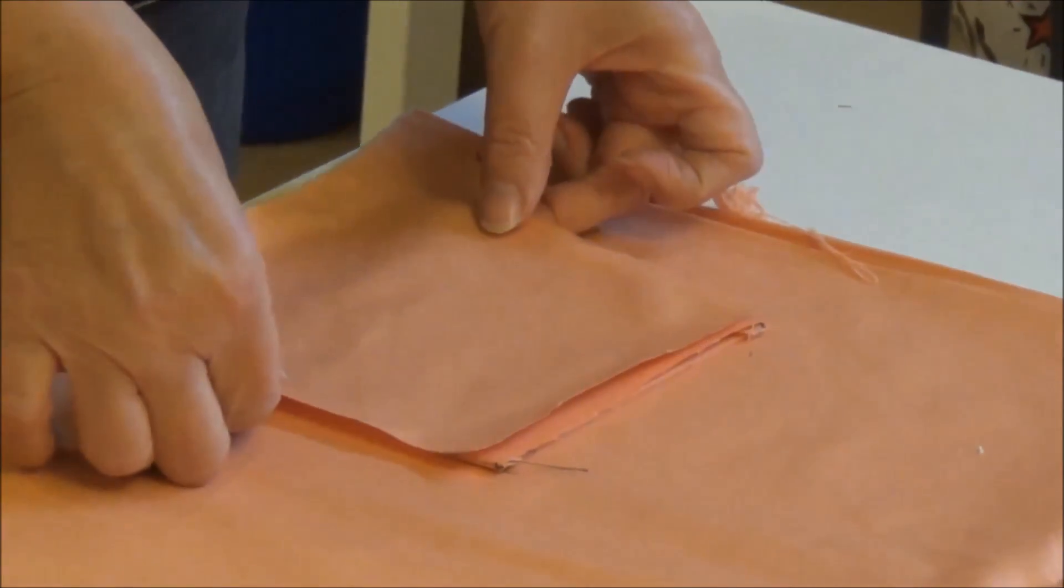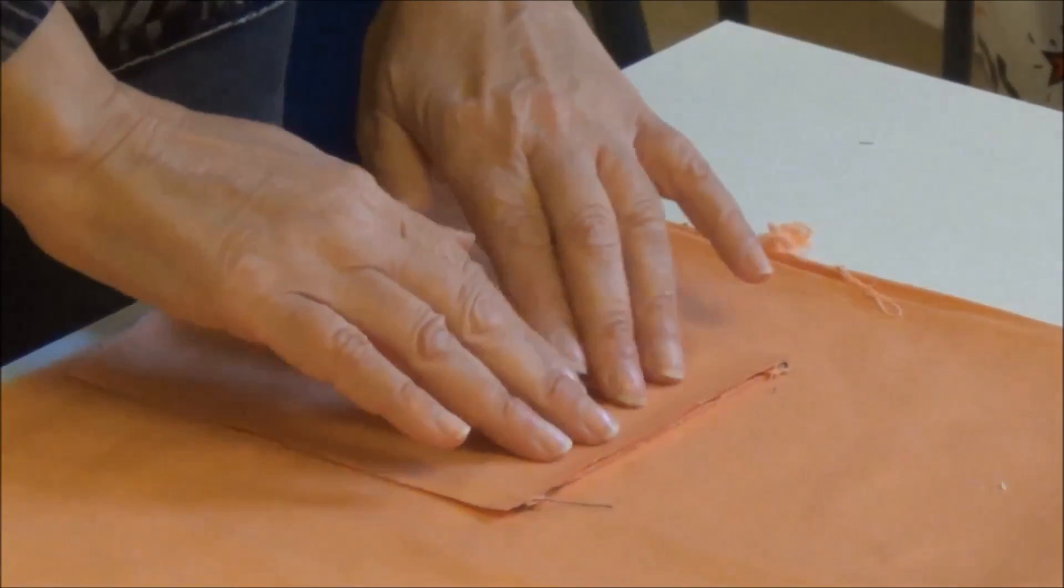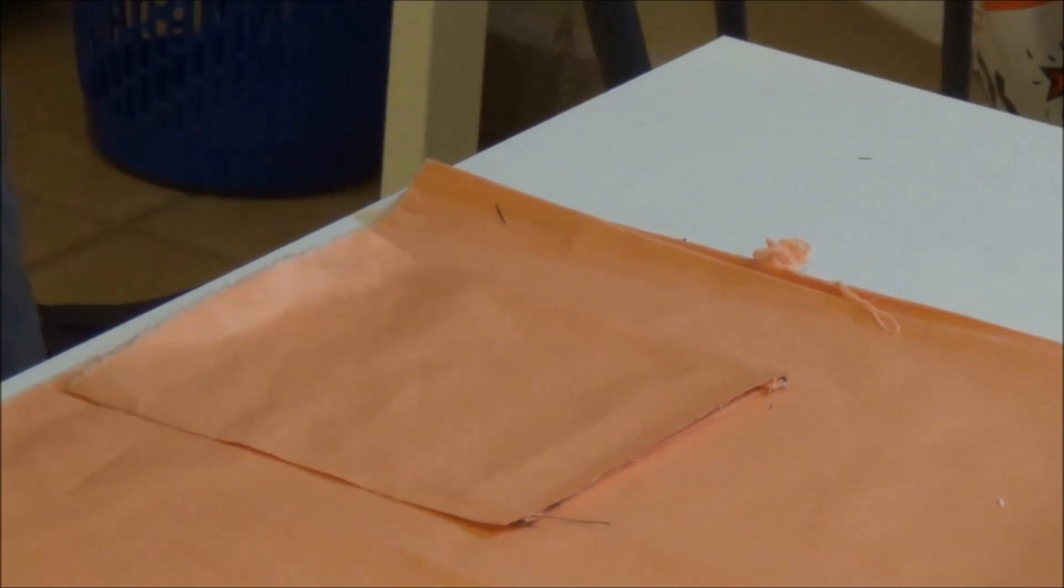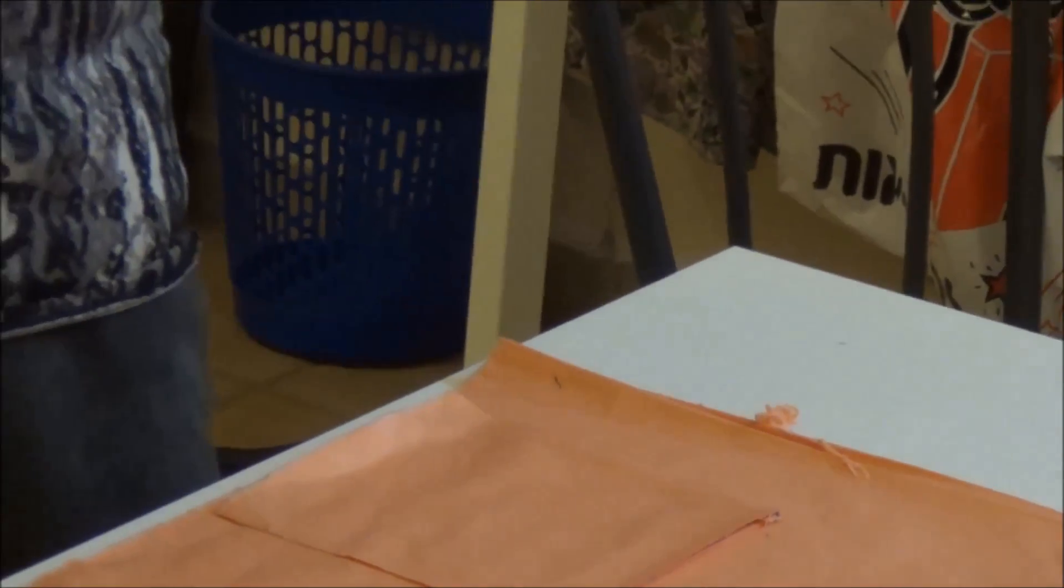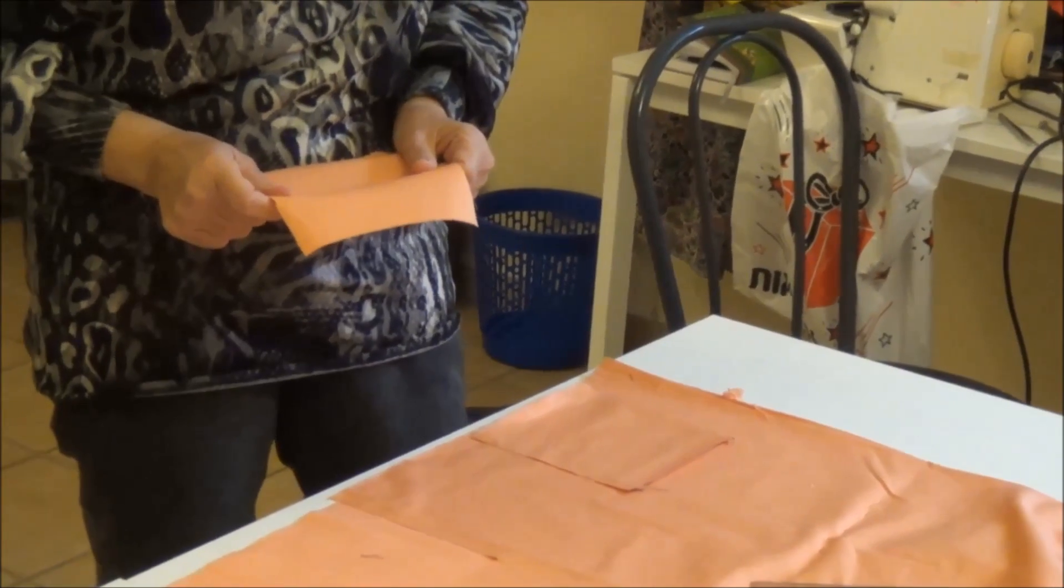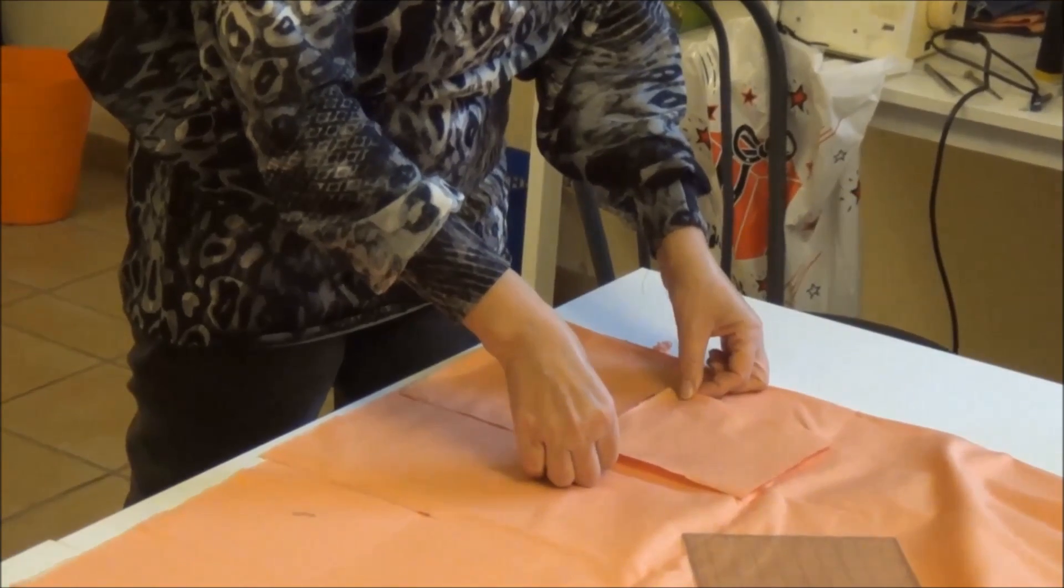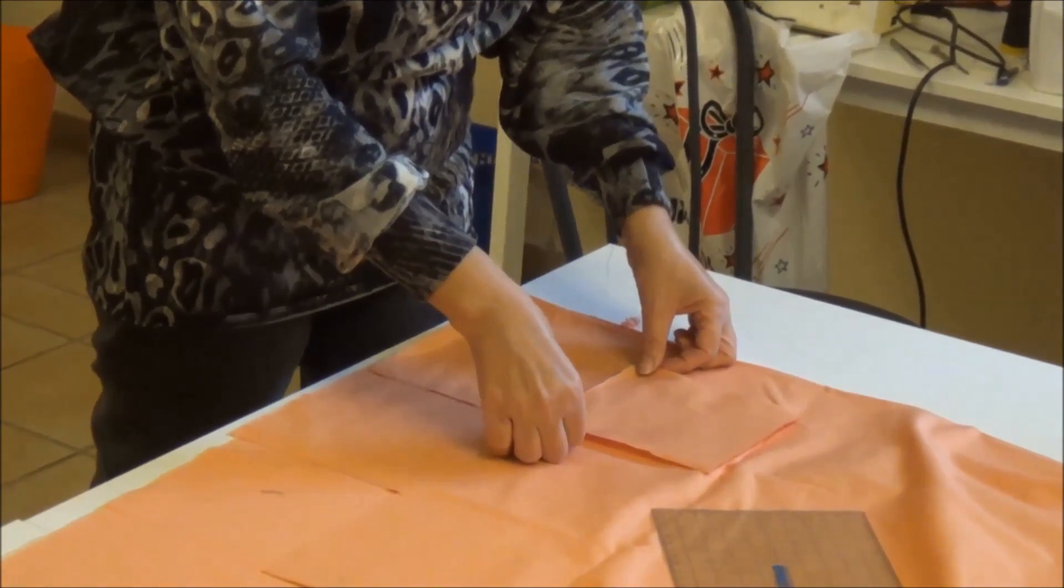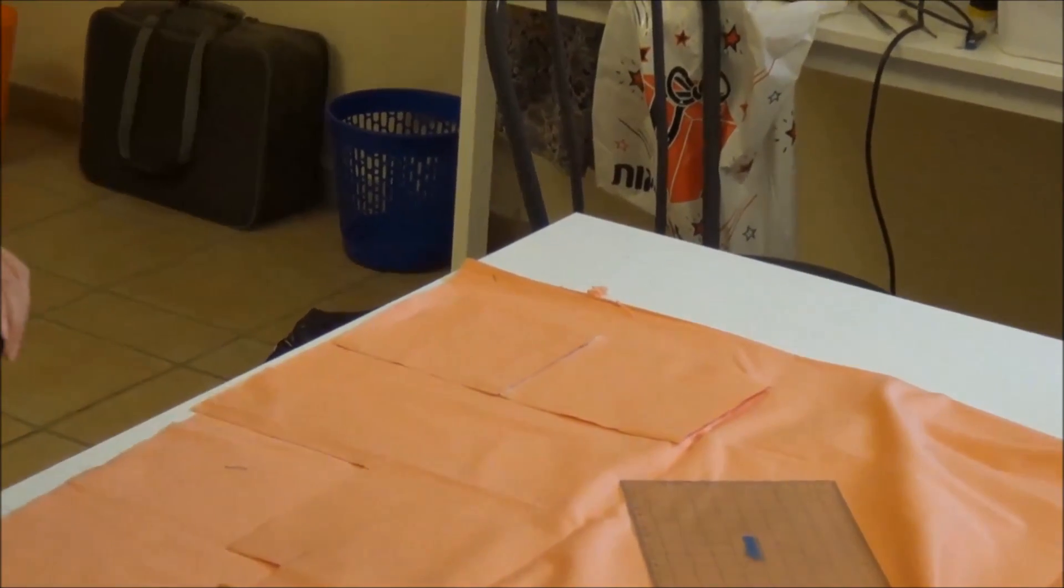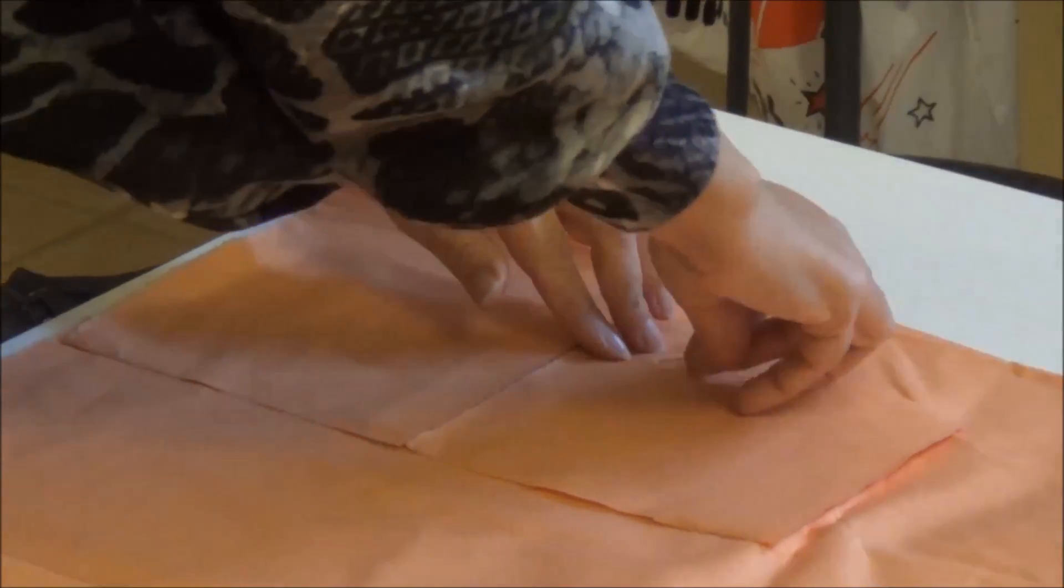Vedete, bisogna essere precisi al millimetro, proprio deve essere nello stesso punto lasciando ai lati un centimetro per parte. Poi vedrete che è il centimetro di cui abbiamo bisogno. Questa è la seconda parte che metteremo di fronte nella parte superiore, dopo chiaramente aver sistemato la parte inferiore sulla linea che abbiamo disegnato in precedenza. Ora passiamo a mettere gli spilli.